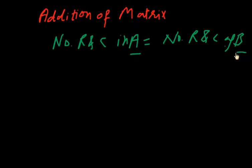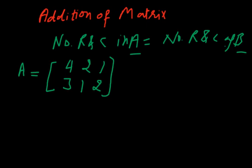I am taking one example. Matrix A is 4, 2, 1, 3, 1, 2. And the second matrix B is 1, 2, 3, 3, 2, 1. Both are equal matrices because the number of rows and columns are equal: 2 into 3. This is also 2 into 3.